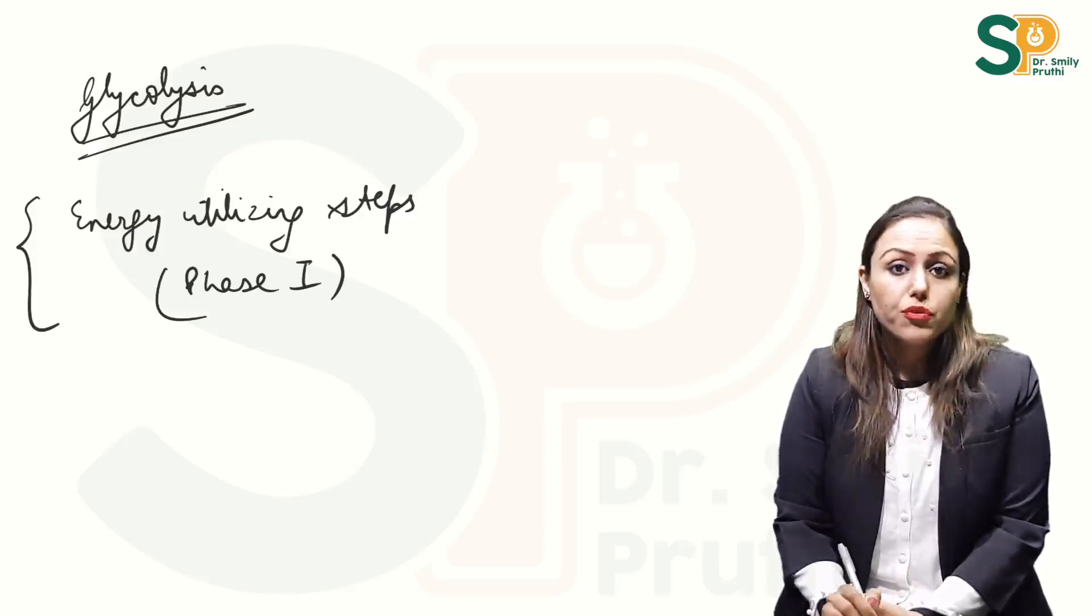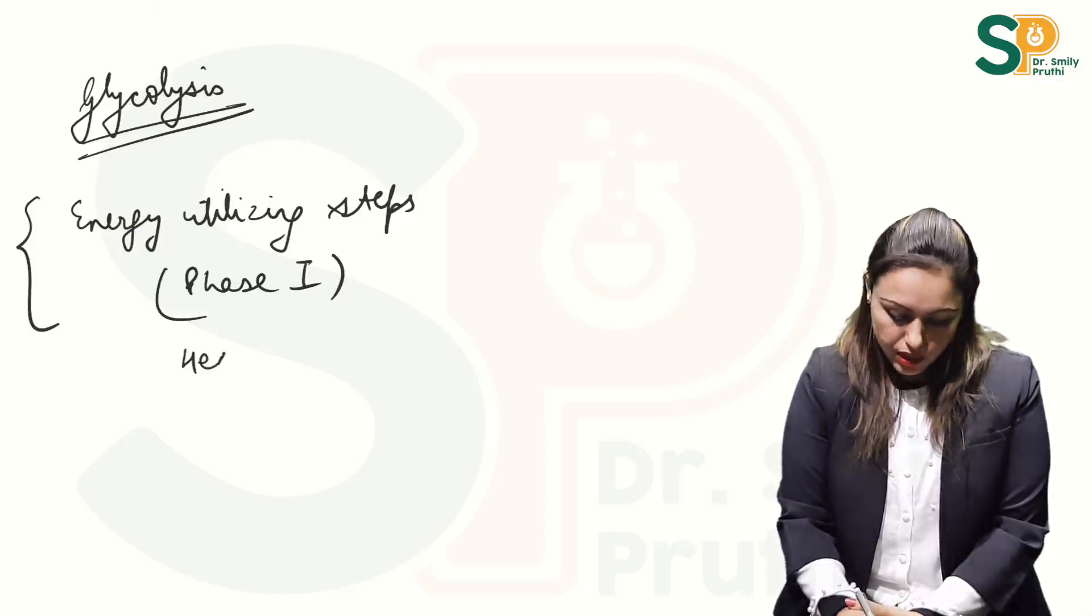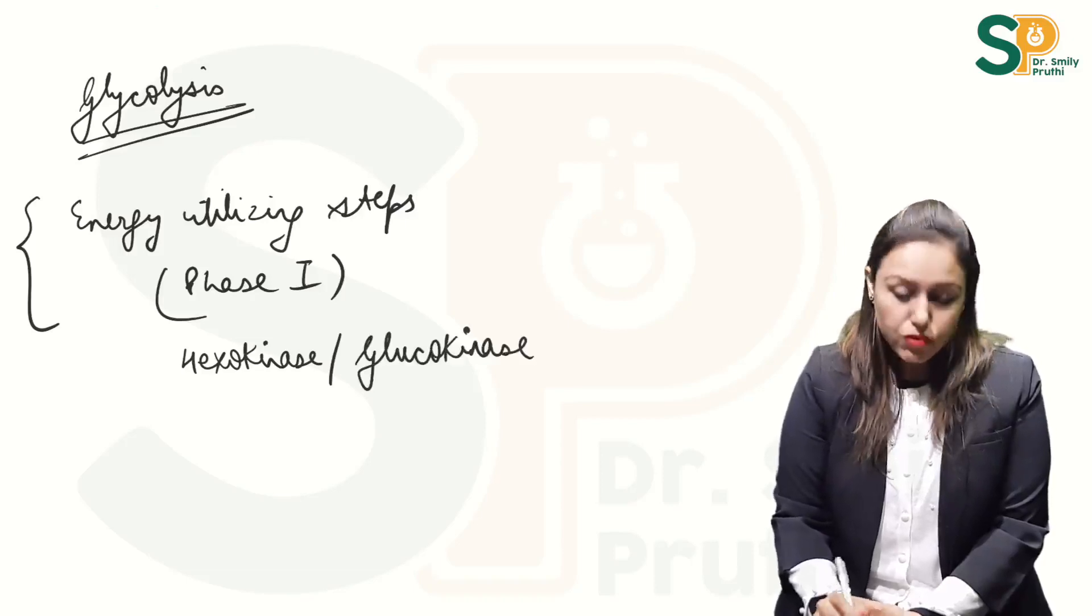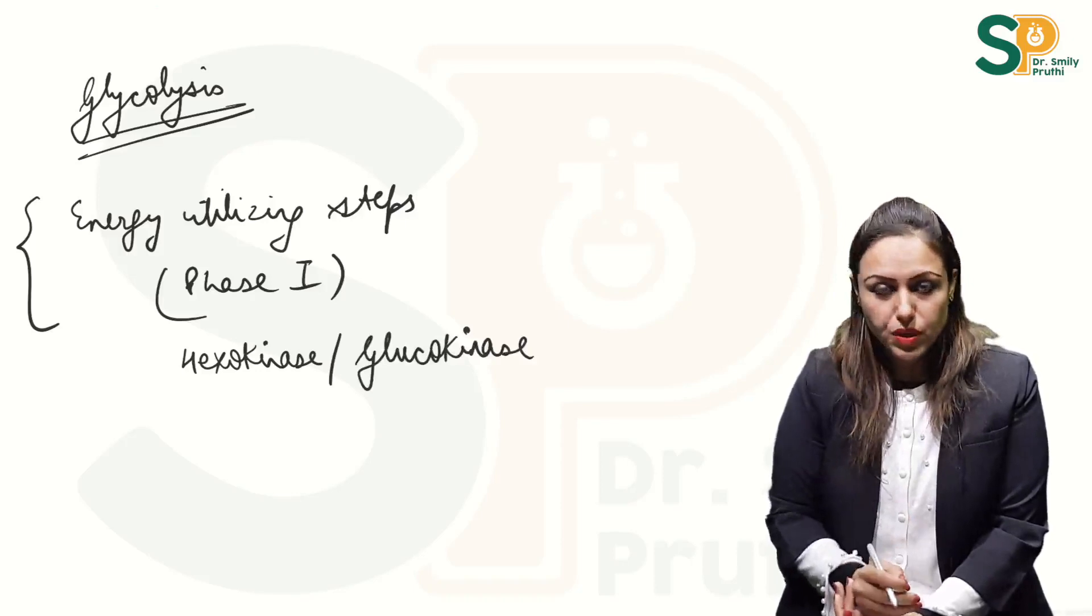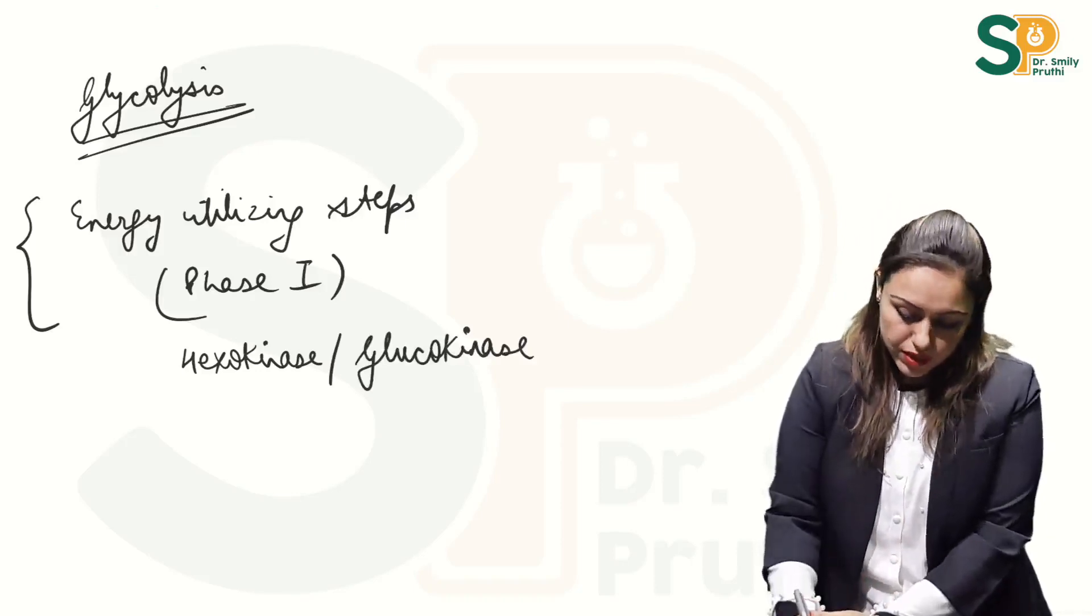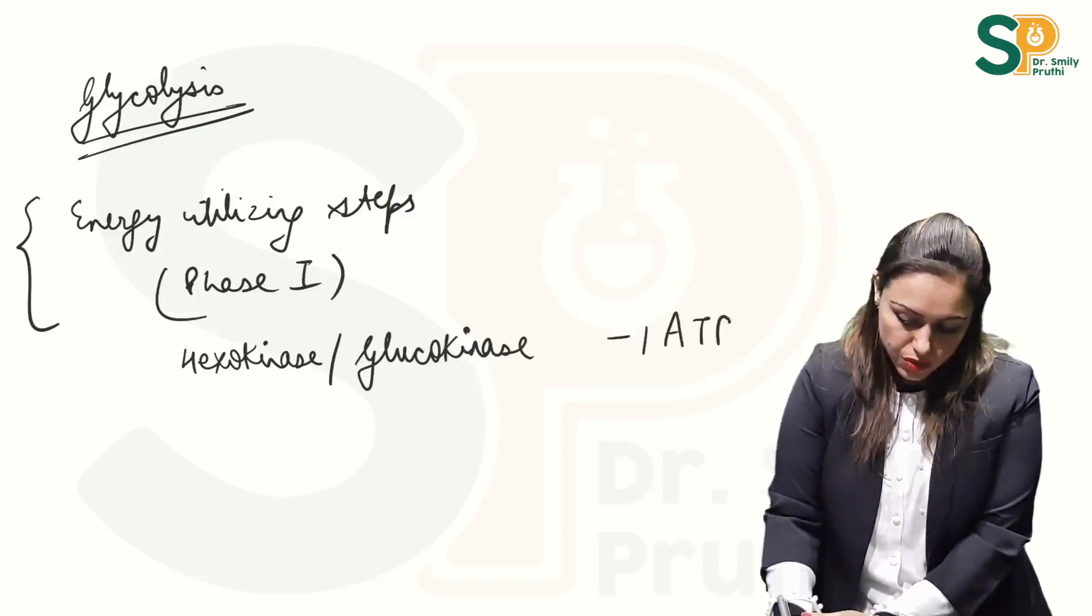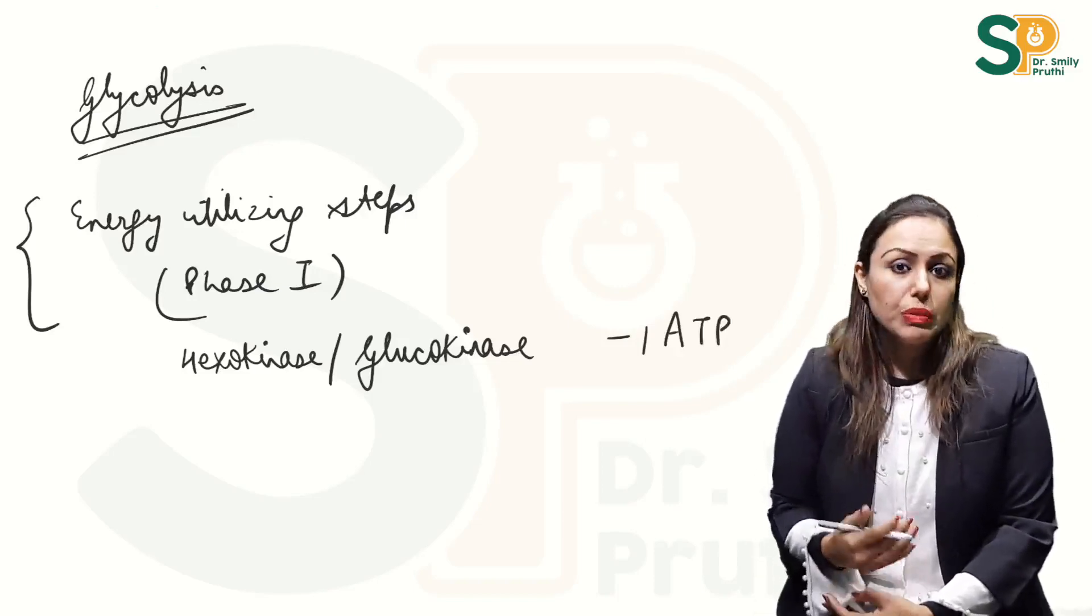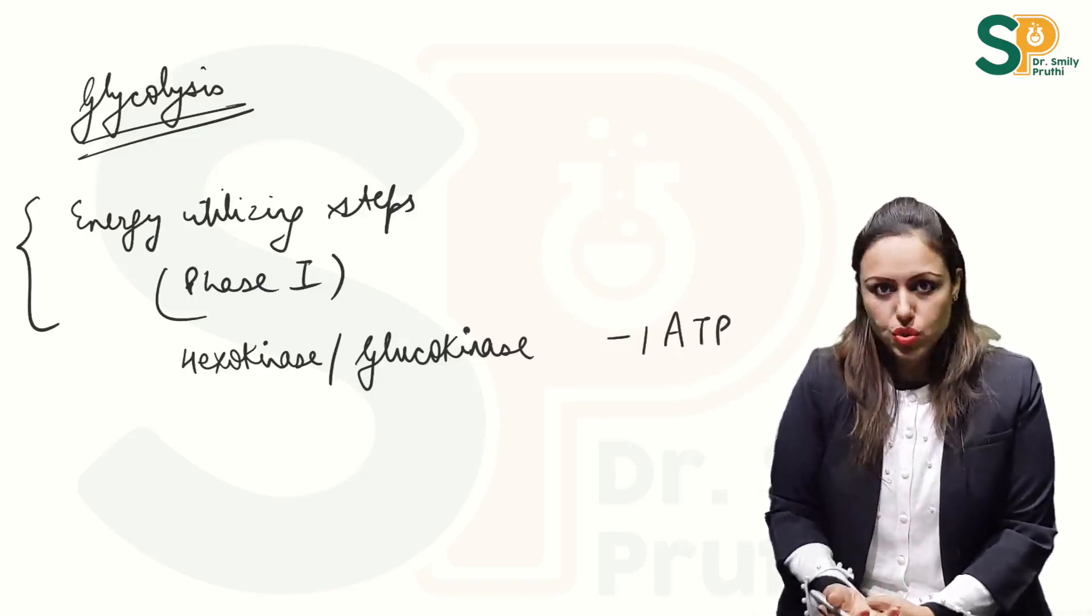One step is the first step catalyzed by enzyme hexokinase or glucokinase which is using one ATP. So I will subtract this one ATP in the energetics of glycolysis. Subtract means this ATP is used.